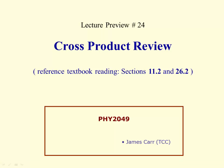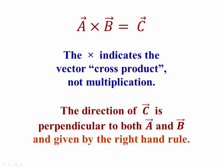This is a review of the cross product properties that we'll need to use in the second semester of physics. As a reminder, we're talking about an operation like A cross B giving you a vector C. This is a vector operation, not multiplication. The direction of C is perpendicular to both A and B and found using the right-hand rule.